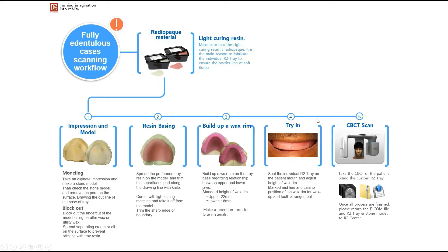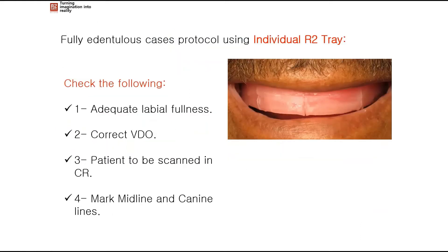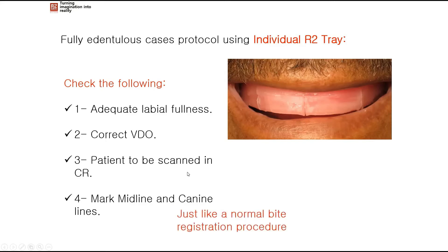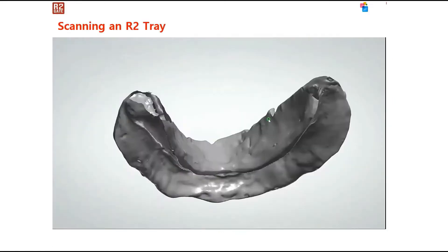Let's talk about the try-in — what we do in the patient's mouth to enable guided surgery. During the try-in, we check for good labial fullness, correct vertical dimension of occlusion, and the patient's centric relation. We mark the midline and the canine lines, just as we do in a normal bite registration process when fabricating a denture.